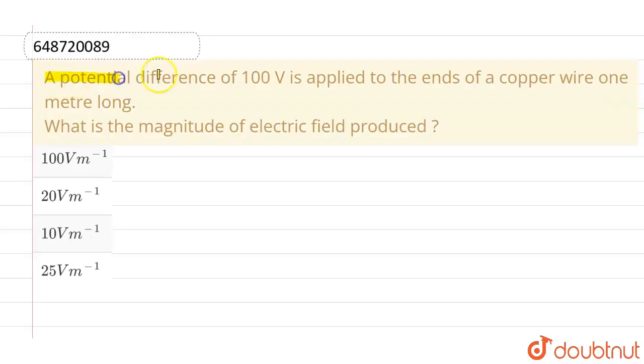A potential difference of 100 volts is applied to the ends of a copper wire one meter long. What is the magnitude of electric field produced? The given options are...